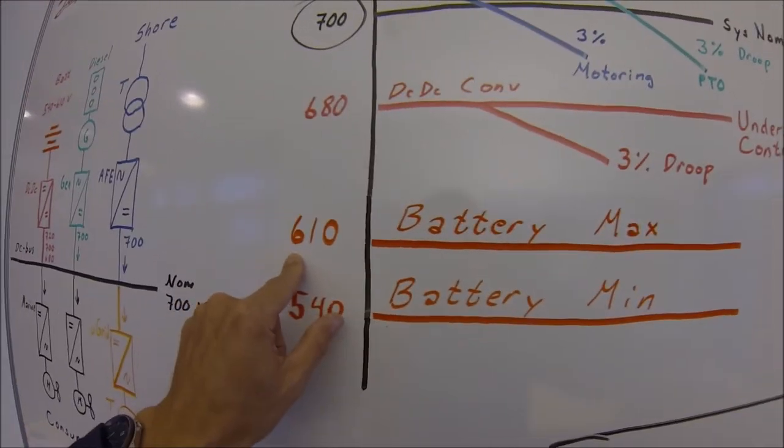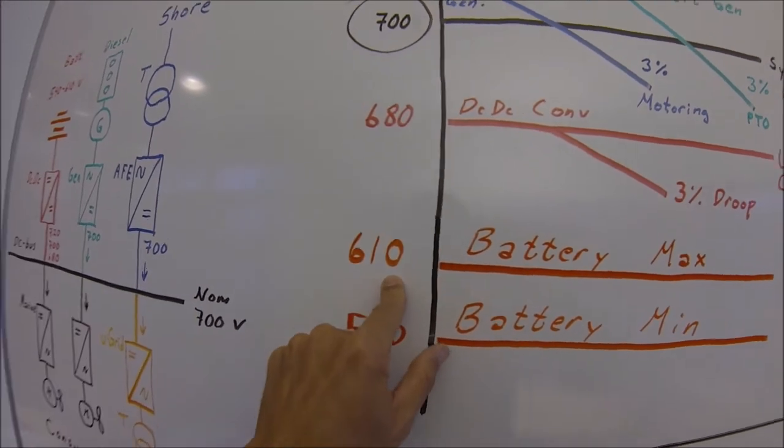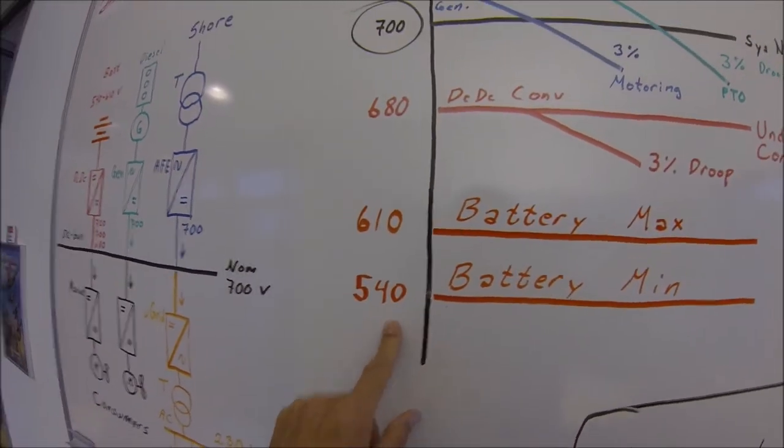The maximum voltage will be the battery state of charge 100%, 610 in this case, and 540 for an empty battery.